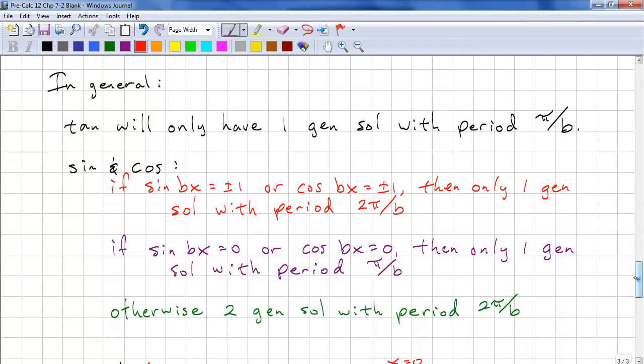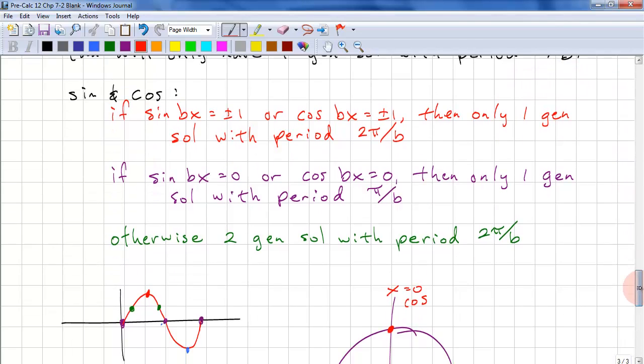So, in general, tangent will only have one general solution with the period being pi over b. Sine and cosine have many different solutions. If sine bx equals plus or minus 1, or cos bx equals plus or minus 1, then there's only one general solution with the period being 2 pi over b. And you would notice this as being a maximum or a minimum value. So, sine and cosine only hit the maximum or minimum once per period. Here we have sine bx equals 0 or cos bx equals 0. There's only one general solution, but the period is pi over b, because we see two solutions before it repeats again.